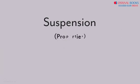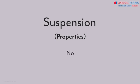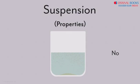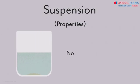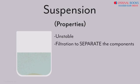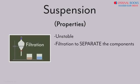So let us discuss a few properties of a suspension. Can we say that suspensions are stable? No, we cannot, because particles of the solute settle down when left undisturbed — a suspension is unstable. Does that mean we can separate the two components of such mixtures? Yes, of course we can. We can use the method of filtration to separate the components of a suspension.